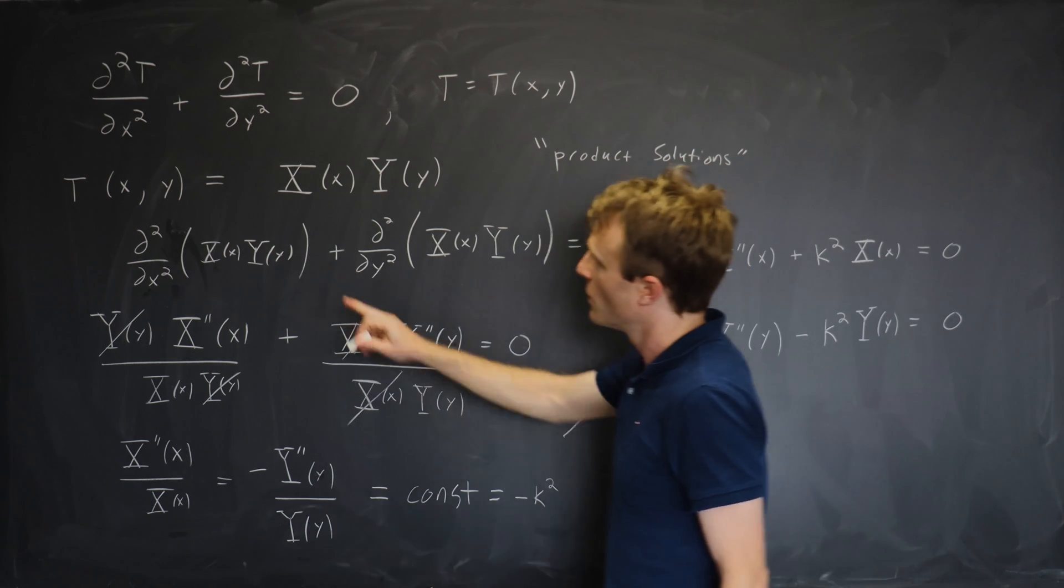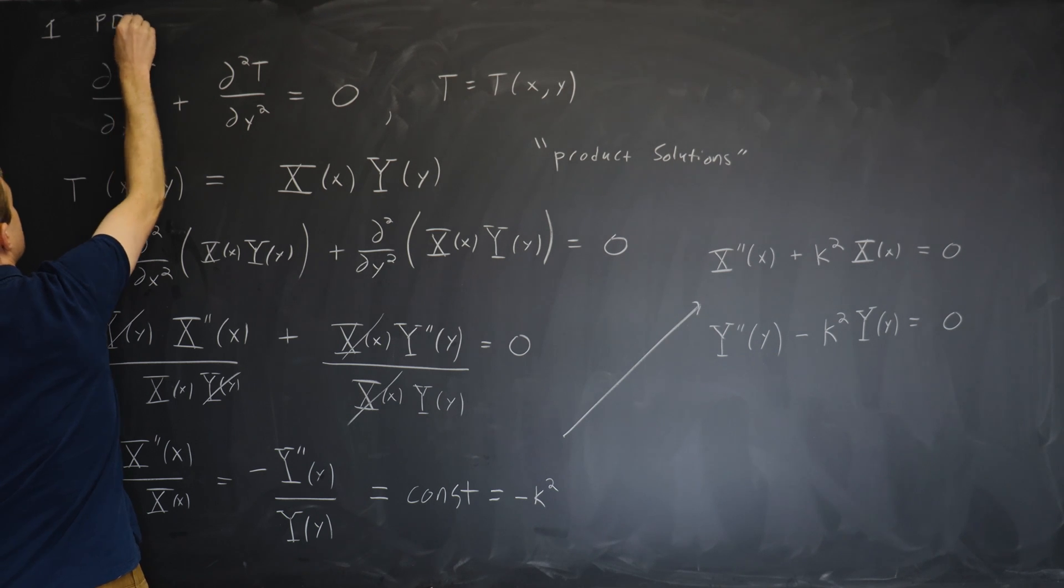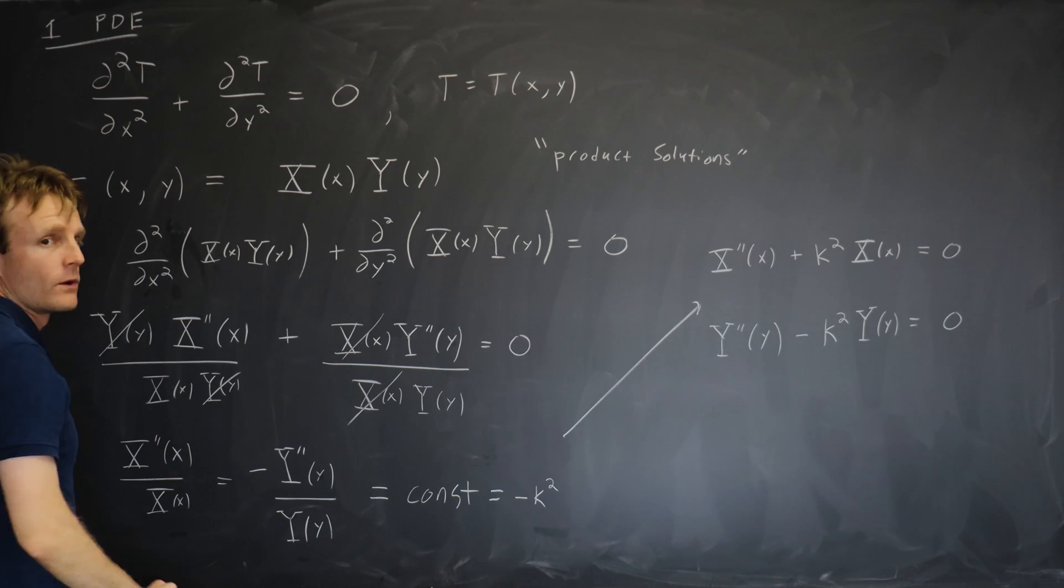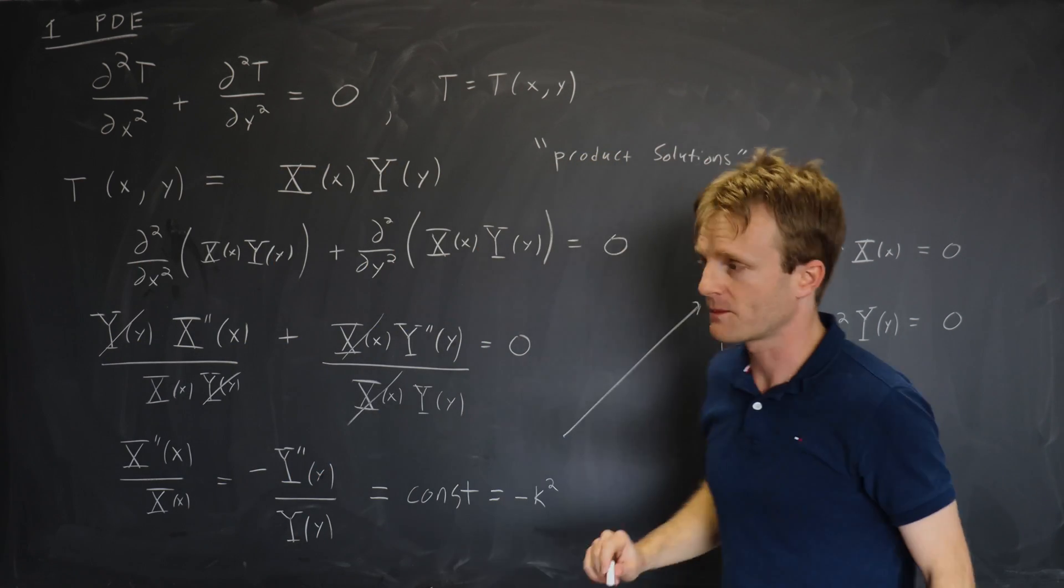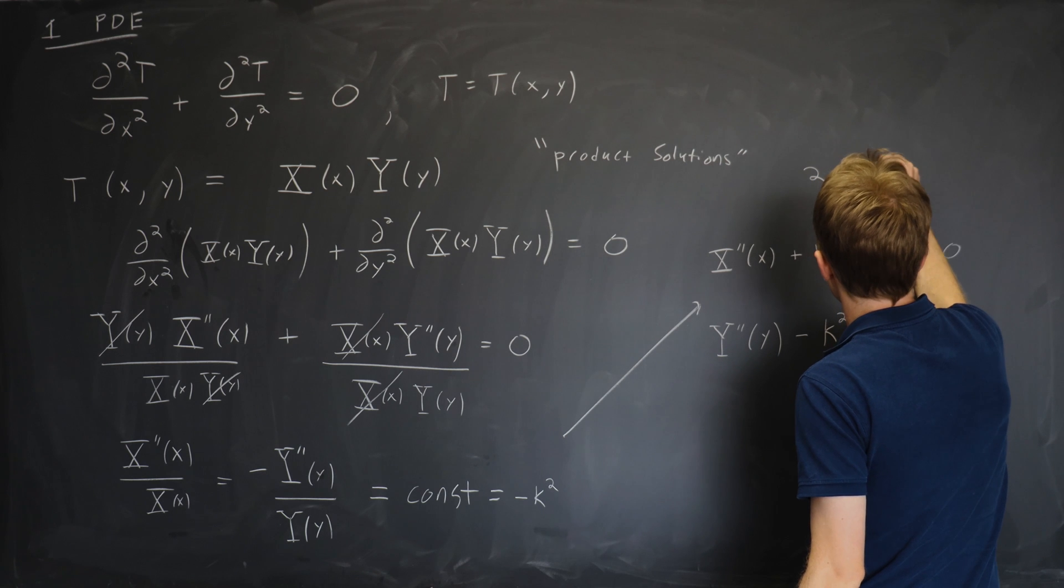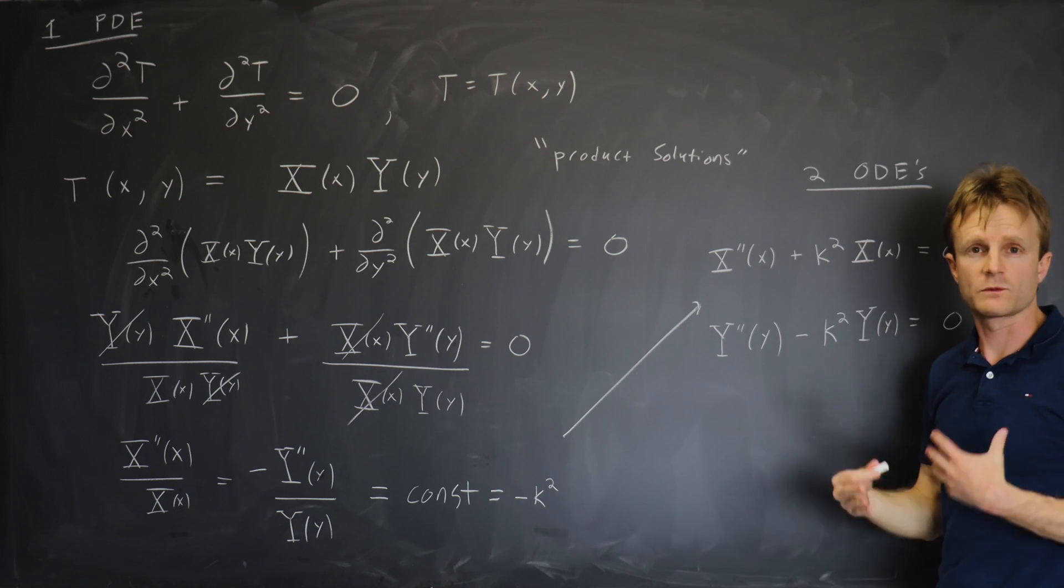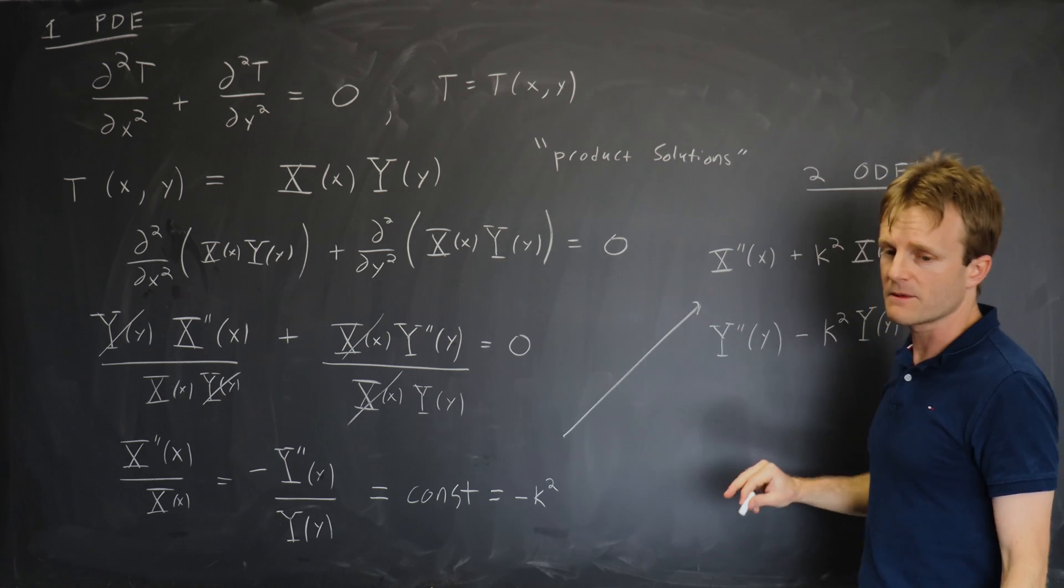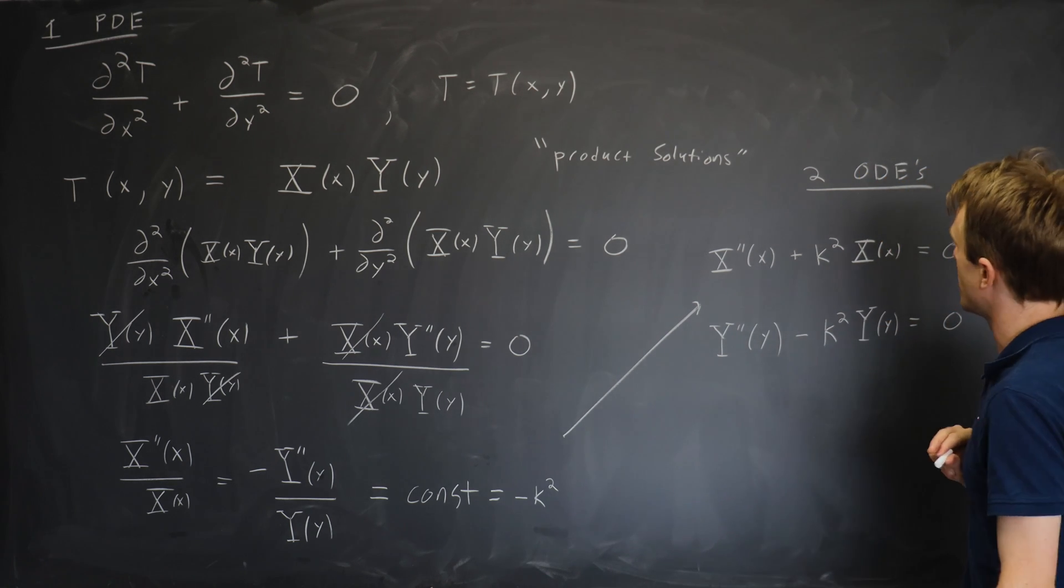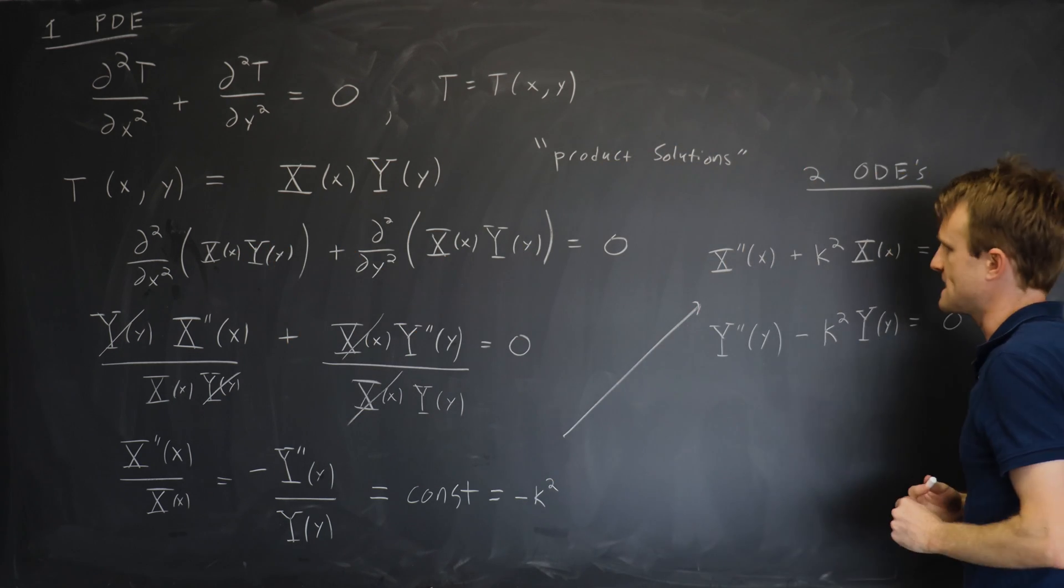So look what happened. We started up here with one partial differential equation. There's partial derivatives and there's only one equation. And what we got after separating variables was two ordinary differential equations. Remember ordinary means the equation involves just the derivative with respect to one variable. So the top equation involves just derivatives with respect to x. And the bottom equation involves just derivatives with respect to y. So separation of variables took one PDE and made it two ODEs.